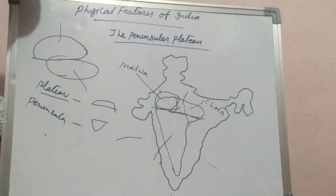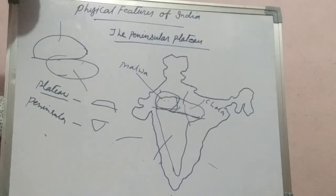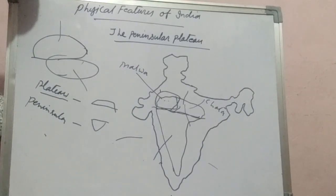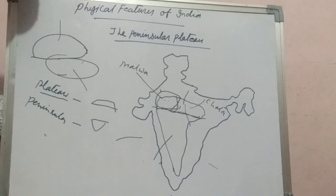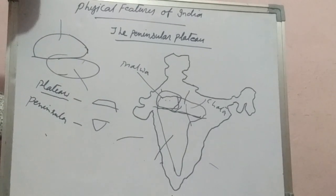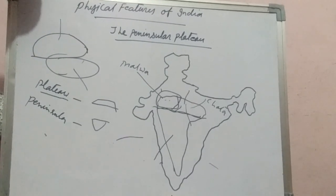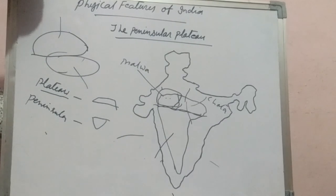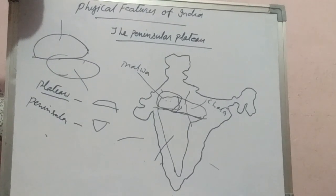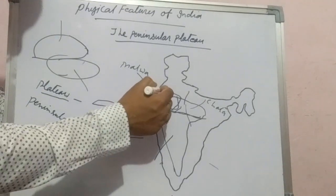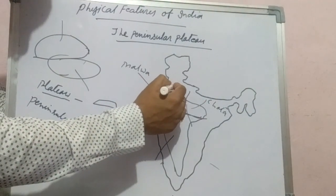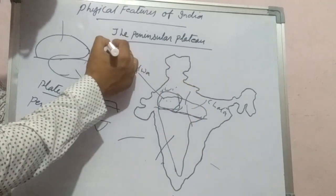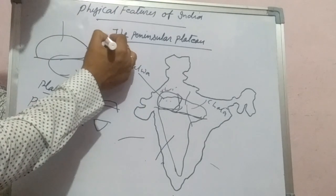The flow of rivers draining this region — namely the Chambal River, Sindh River, Betwa River, and Ken River — flows from southwest to northeast direction. One more river is the Luni River, the longest river of this region, meaning the western part of India. The Central Highlands are wider in the west but narrow in the east.